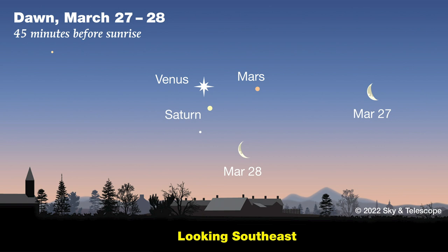You might want to circle March 27th and especially the 28th on your calendar. On those mornings, this trio of planets will be joined by a lovely crescent moon. On the 28th, Venus, Mars, Saturn, and the moon will be bunched so tightly that you'll be able to cover all of them with one clenched fist. Now, Jupiter is in conjunction with the sun on March 5th — if a total solar eclipse were to magically occur that day, you'd see Jupiter right next to the sun, just a finger's width away. But the sun's brilliant glow will keep Jupiter hidden until the first week of April at the earliest.